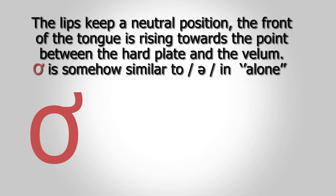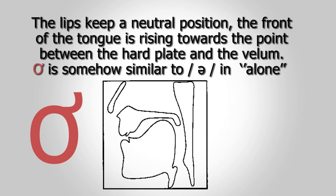Ơ is a mid-central, unrounded vowel. The lips keep the neutral position. The front of the tongue is rising towards the point between the hard blade and the velum. This sound is produced to some degree like the sound O in the word along in English.